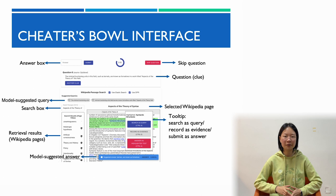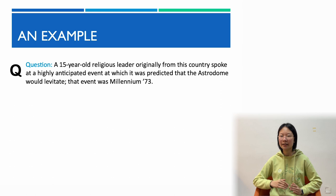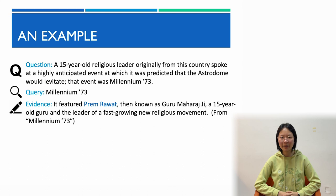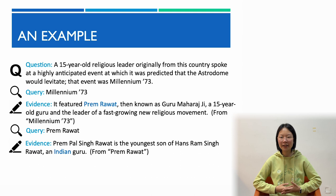Let's see a question-answering example of this work. Here's the first clue of a question. A human contestant creates the initial query, 'Millennium 73', and retrieves a set of Wikipedia pages. They open the page for Millennium 73 and manually record a paragraph as evidence. They continue this iterated process of querying and obtaining evidence until they answer the question with India, which is the correct answer.